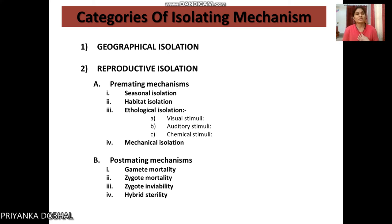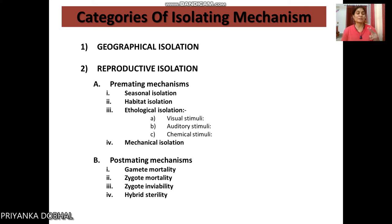Within reproductive isolation, there is a pre-mating mechanism. The pre-mating mechanism includes two types of isolation. The first is seasonal isolation, based on seasonal differences.